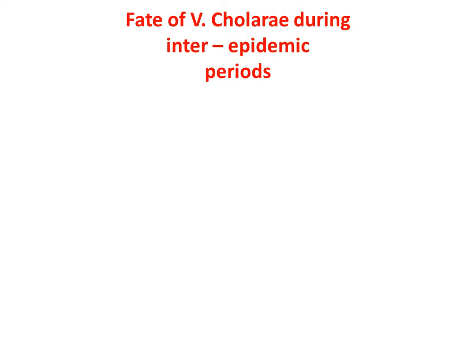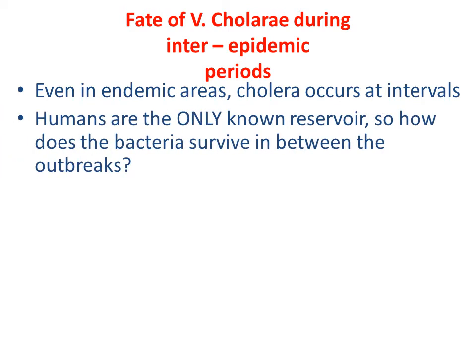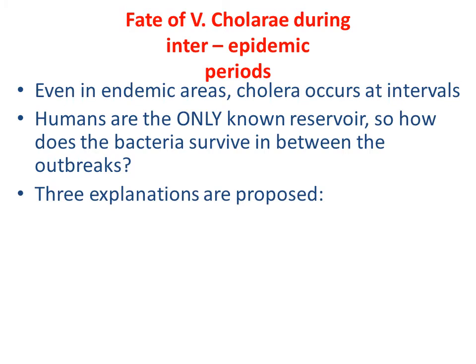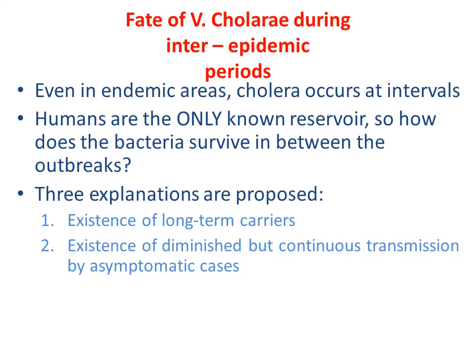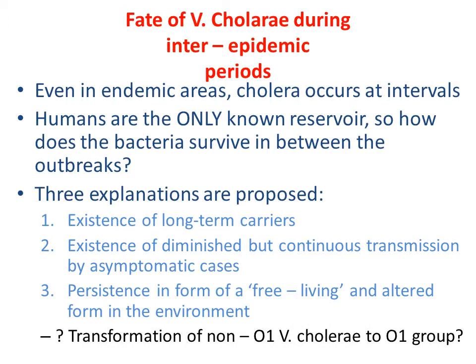There has been speculation about what happens to Vibrio cholerae during inter-epidemic periods, because in endemic areas cholera occurs at intervals and humans are the only known reservoir. Three explanations have been proposed: existence of long-term carriers maintaining the reservoir; diminished but continuous transmission occurring via asymptomatic cases; or the bacteria existing in a free-living form in the environment. Some have speculated that non-O group 1 Vibrio cholerae, which are prevalent in surface waters, can transform into O group 1 and cause outbreaks.